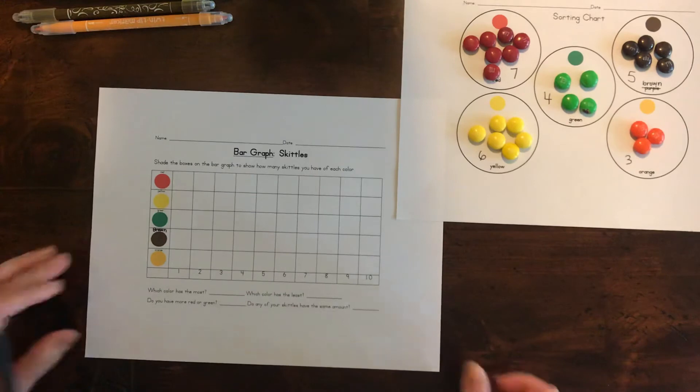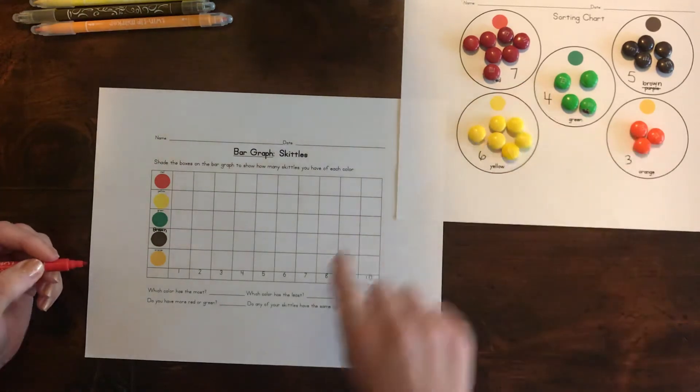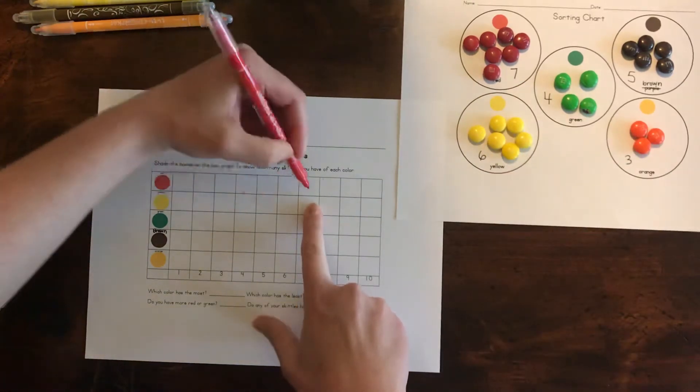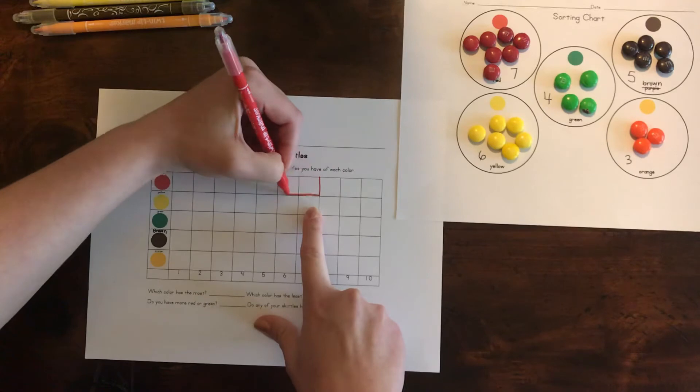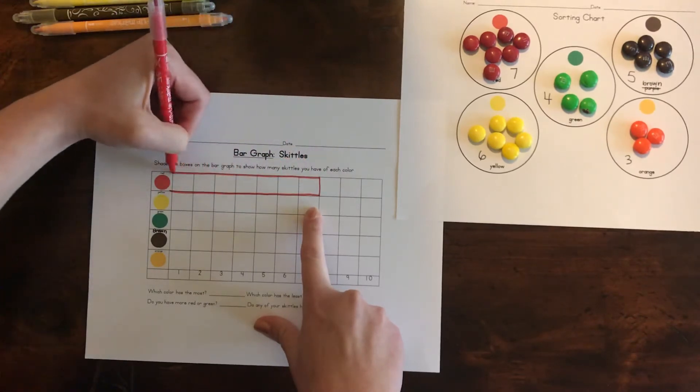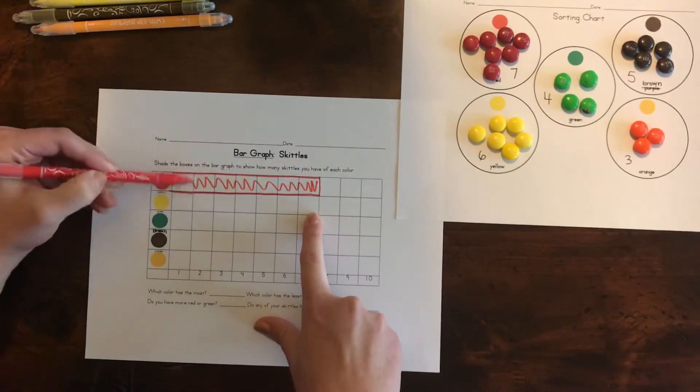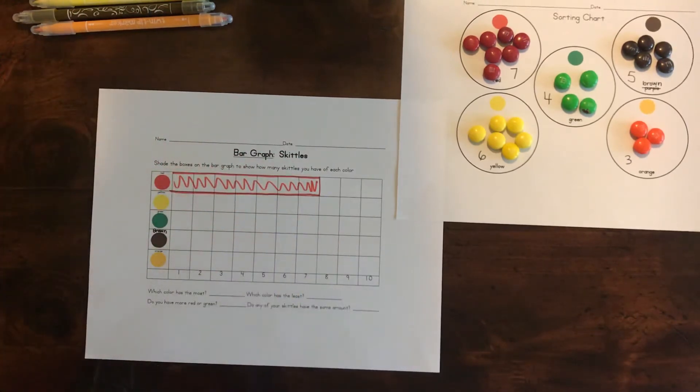This graph is a bar graph. So instead of drawing pictures of M&Ms, we're going to have some bars on here. So we're going to do the same thing. Look at how many we had. We had seven red. So we see the seven. So you're going to outline just like this to make a bar and then you can color it in. We're going to do that with all the other colors.